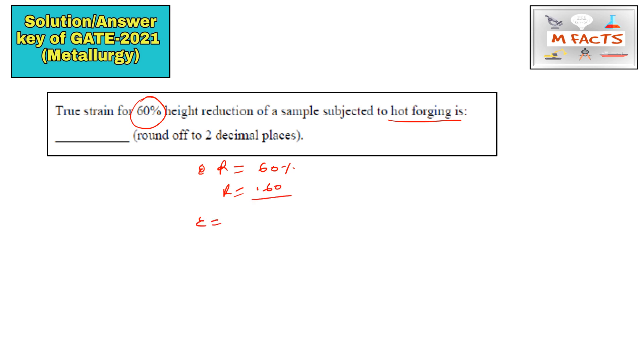How to find the true strain, that is epsilon equals ln of 1 divided by (1 minus r). So epsilon is equal to ln 1 divided by (1 minus r). This formula is also valid in terms of area and in terms of height also. So 1 divided by (1 minus 0.60) that will be equals to ln of 1 by 0.40.